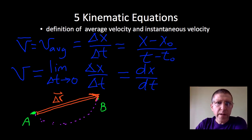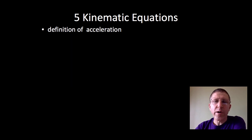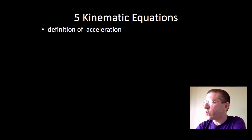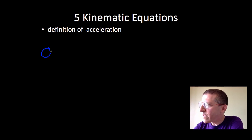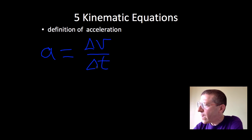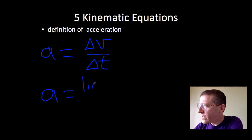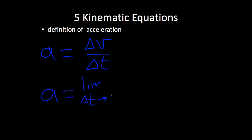Next up, we go on to the definition of acceleration. Typically we're going to have constant acceleration, so our acceleration is going to be the average acceleration. A is defined as delta V over delta T. In the case where we don't have constant acceleration, the instantaneous acceleration is the limit as delta T approaches zero of delta V over delta T. In calculus, we express this as dV/dt.